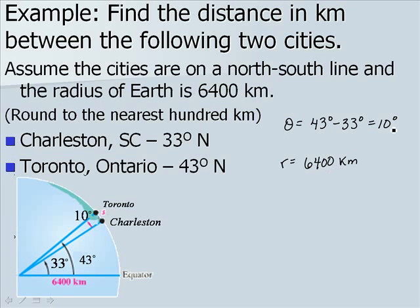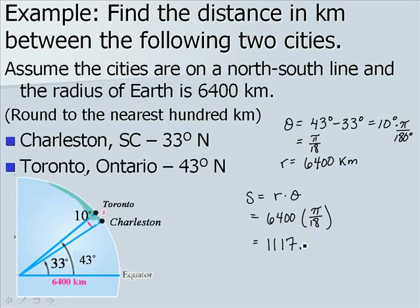But at this point, we can't just plug in theta, because recall that we need to convert it to radian measure. So we're going to multiply by π over 180 in order to get a degree measure for theta of π over 18. So s, our arc length, which is r times theta, is equal to 6,400 kilometers times π over 18. So we end up with an answer of 1117.01 kilometers, but we want to round to the nearest 100 kilometers, so we have that s, or our arc length, is approximately 1100 kilometers.